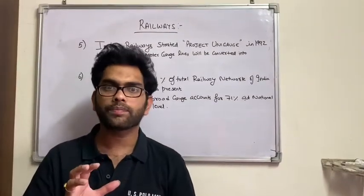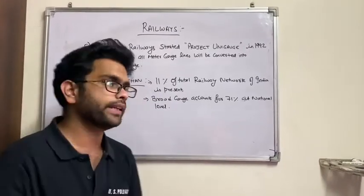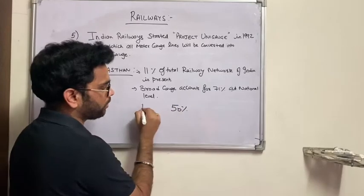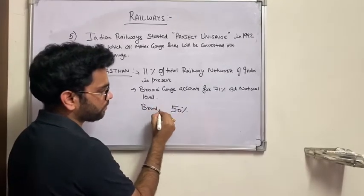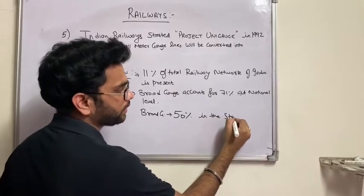And if we compare all the networking lines in the state itself, then it accounts 50% - broad gauge is 50% in the state itself.